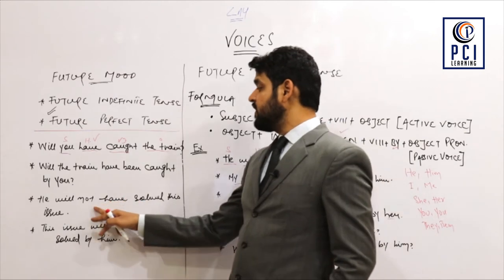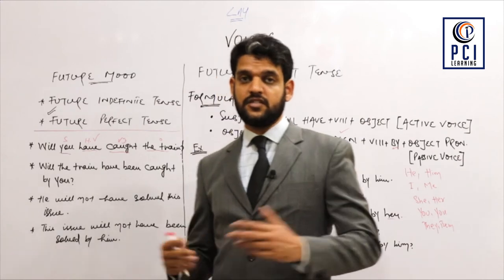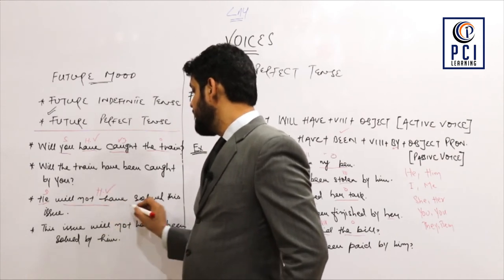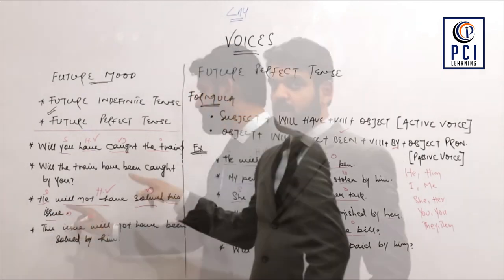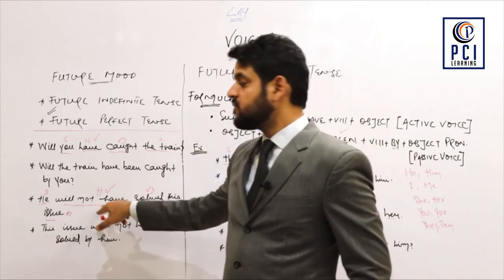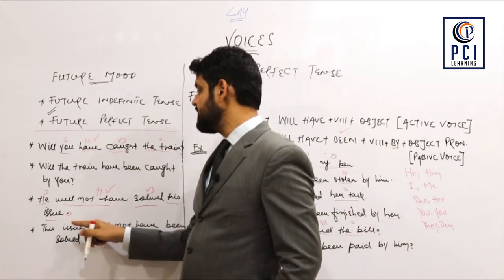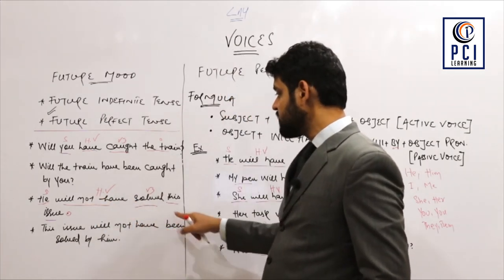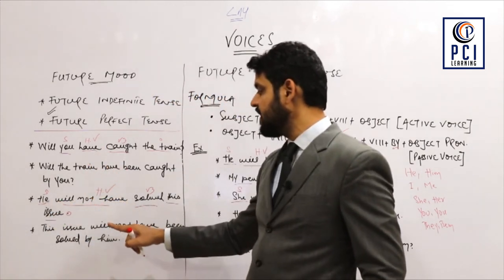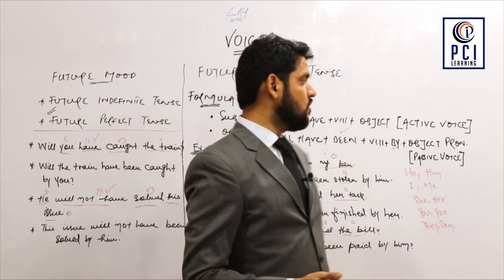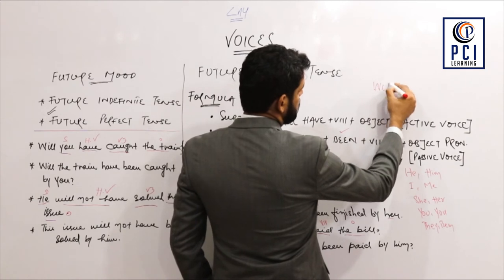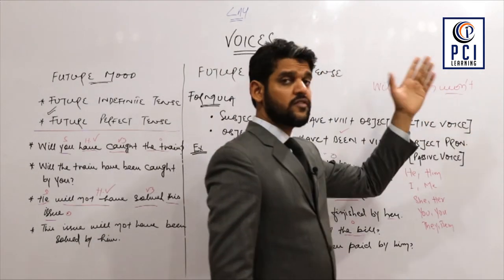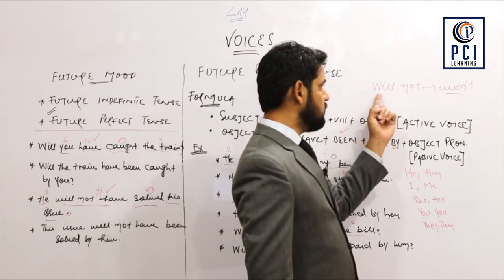The final example: 'He will not have solved this issue' — meaning 'wo issue ko solve nahi kar chuka hooga.' 'He' is the subject, 'will not have' is the helping verb, 'solved' is the third form, and 'this issue' is the object. This is a negative sentence, so 'not' is kept. Passive: 'This issue will not have been solved by him.' Also note: the contraction of 'will not' is 'won't' — I will provide the contraction list in the description box.